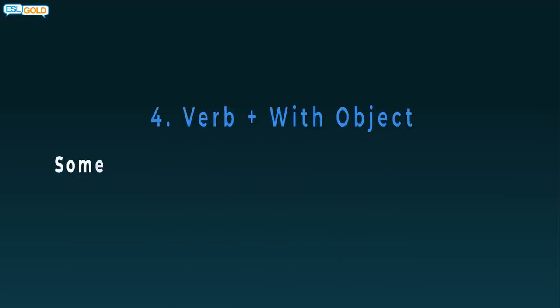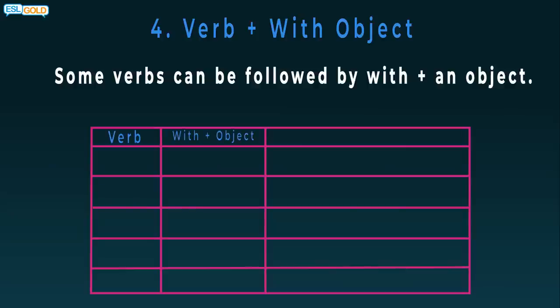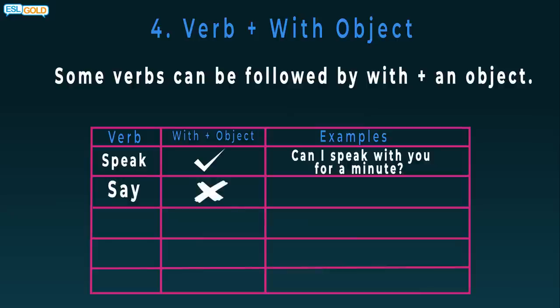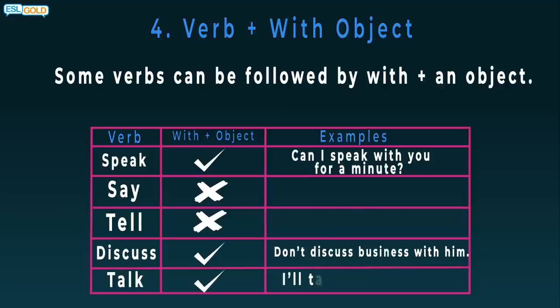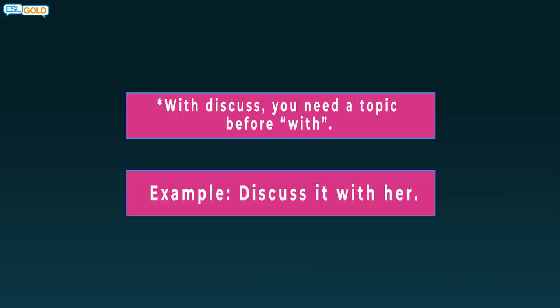4. Verb plus with object. Some verbs can be followed by with plus an object. Speak: yes. Can I speak with you for a minute? Say: no. Tell: no. Discuss: yes. Don't discuss business with him. Talk: yes. I'll talk with the boss. With discuss, you need a topic before with. Example: discuss it with her.